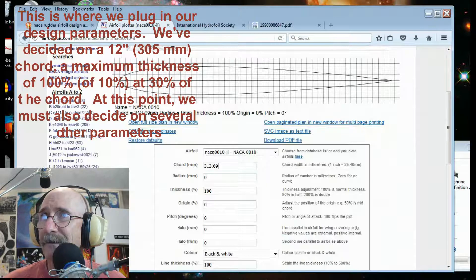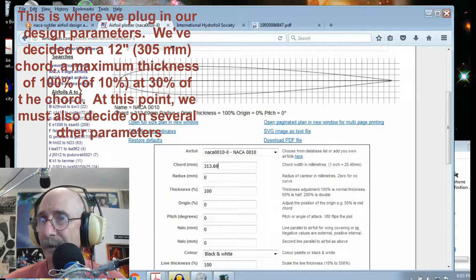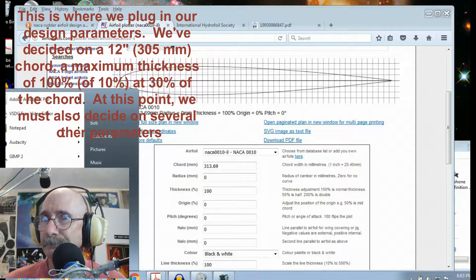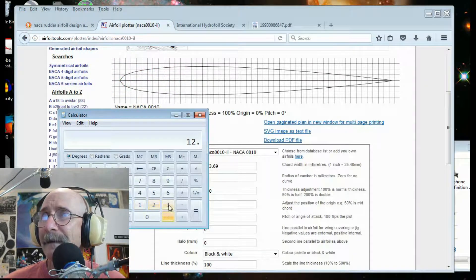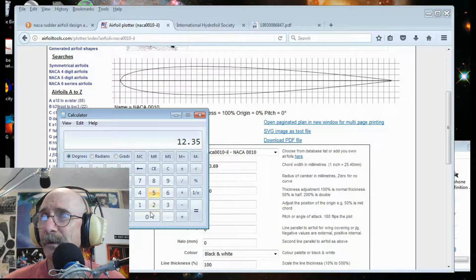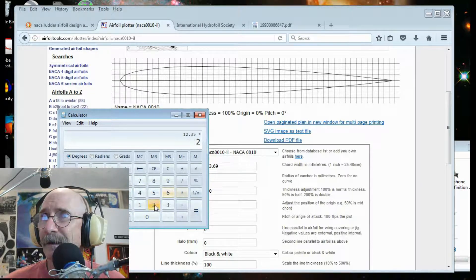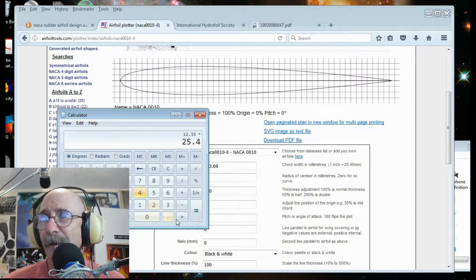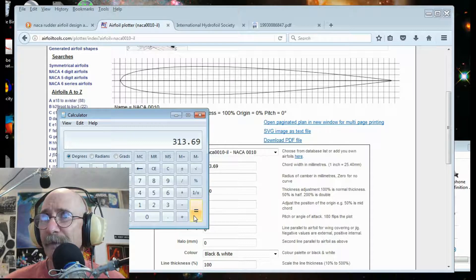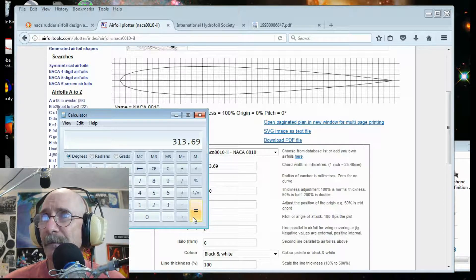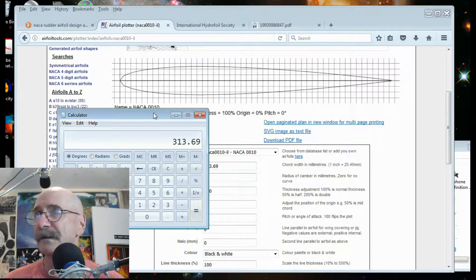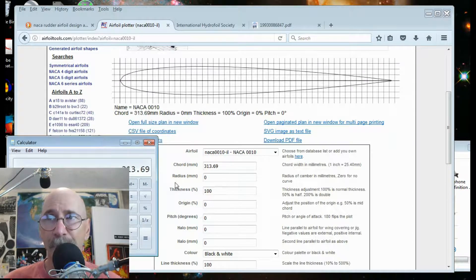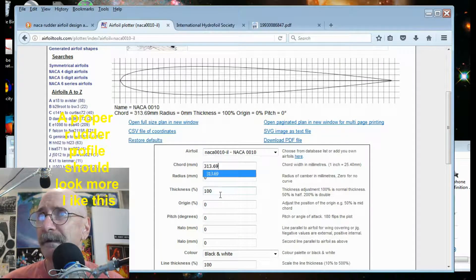As it turns out, let's bring up the calculator. I want a 12.35 inch airfoil. So I'm going to multiply that by 25.4 millimeters per inch, which gives me a 313.69 millimeter profile. So let's plug that in.